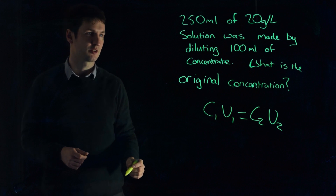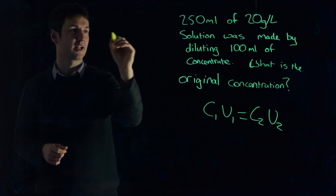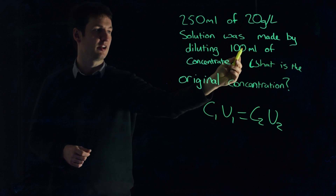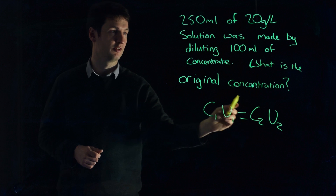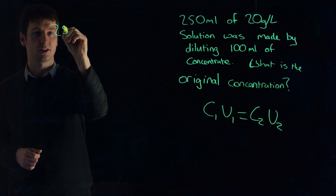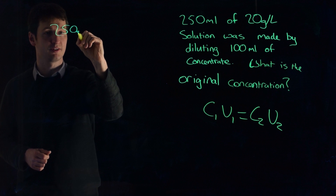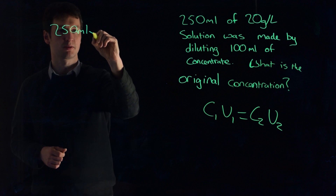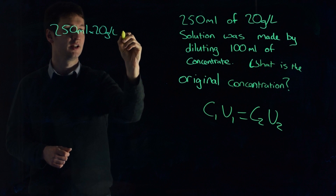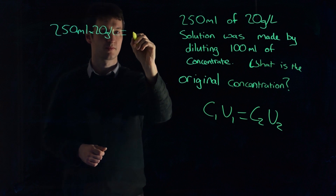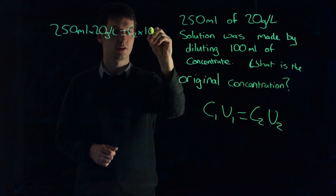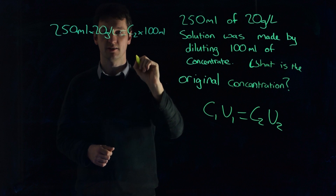So let's put these things into the equation. On one side we're going to have 250 milliliters of 20 grams per liter, and on the other side we're going to have 100 milliliters of unknown concentration. So: 250 milliliters multiplied by 20 grams per liter is going to be equal to concentration 2 multiplied by 100 milliliters.